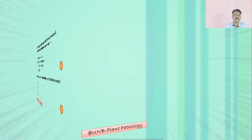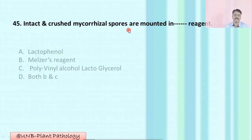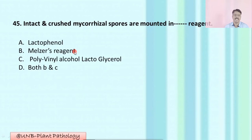Question number forty-five: Intact and crushed mycorrhizal spores are mounted in which reagent? A: lactophenol; B: Melzer's reagent; C: polyvinyl alcohol lactoglycerol (PVLG); D: both B and C. The correct option is D: both B and C — Melzer's reagent and polyvinyl alcohol lactoglycerol.